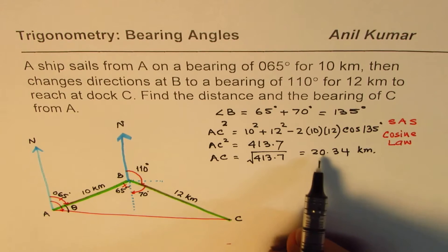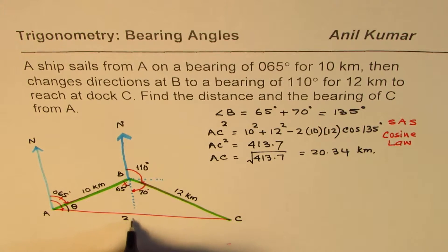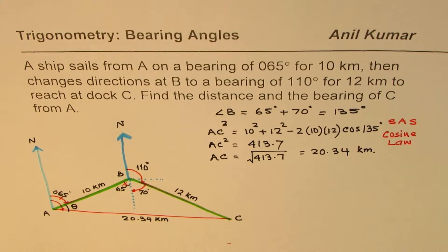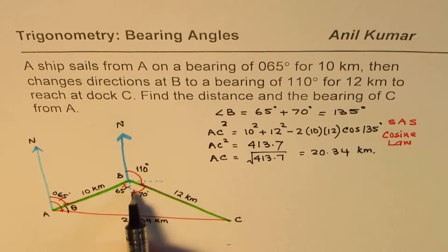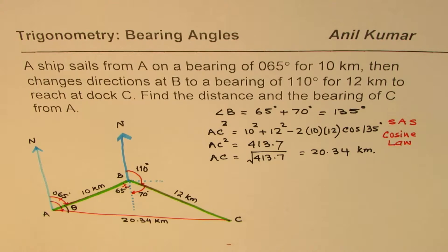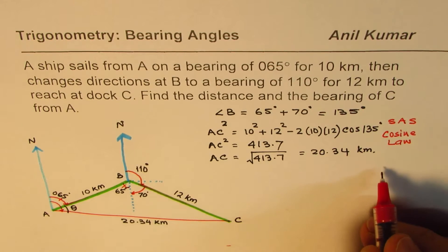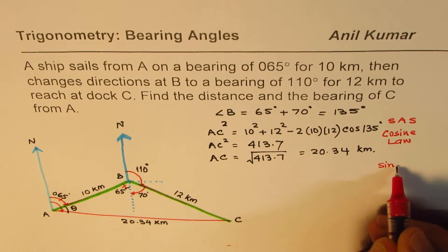How do you find theta? We know now all the three sides. The third side just calculated is 20.34 kilometers. Now we have a set with side and opposite angle known. So we can find that. So we can apply the sine law. So let's apply the sine law now to calculate the angle.